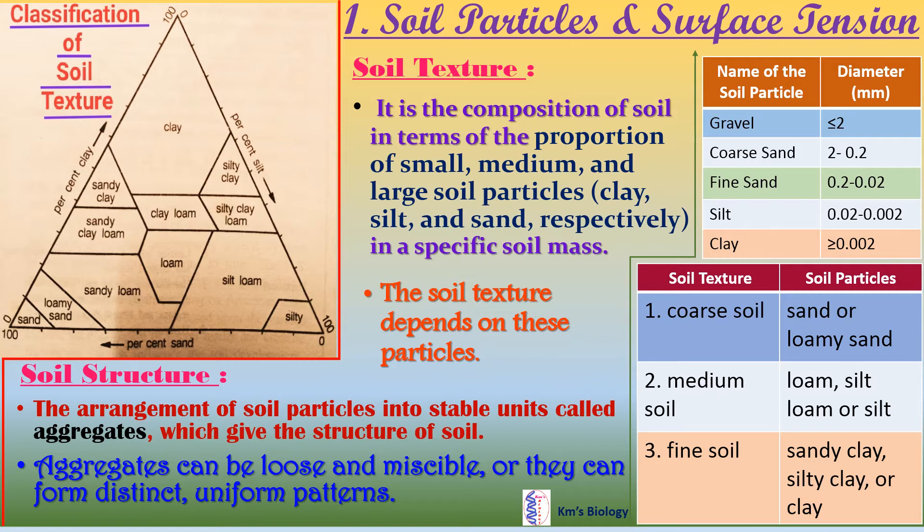The second parameter is soil structure — the arrangement of soil particles into stable units called aggregates, which give the structure of soil. Aggregates can be loose and miscible, or they can form distinct uniform patterns.